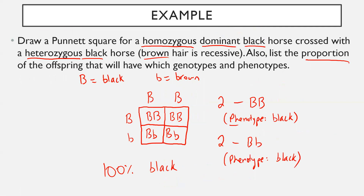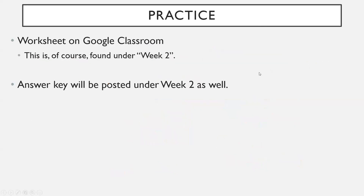This whole Punnett Square idea is quite a simplification — there's often more than one gene allocated to hair type and things like that. But it is an interesting way of predicting what offspring are going to look like given the characteristics of a parent. There's a worksheet on Google Classroom found under week two. Look for the worksheet that talks about Punnett Squares.